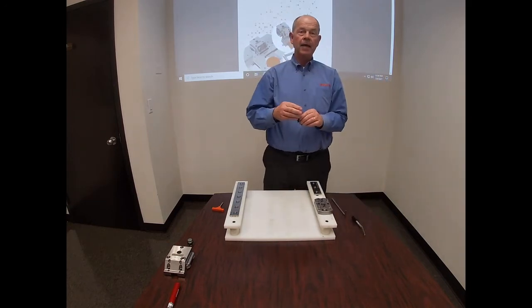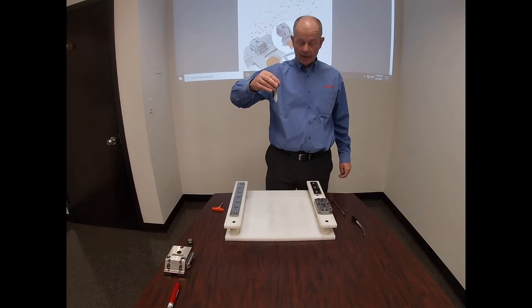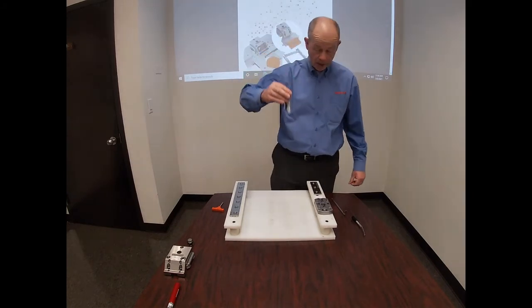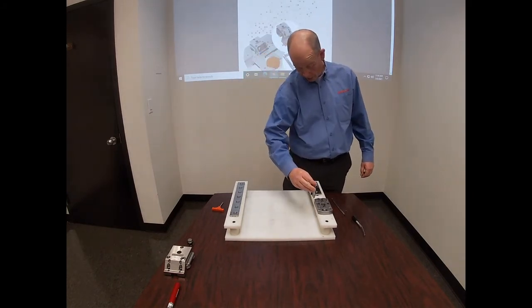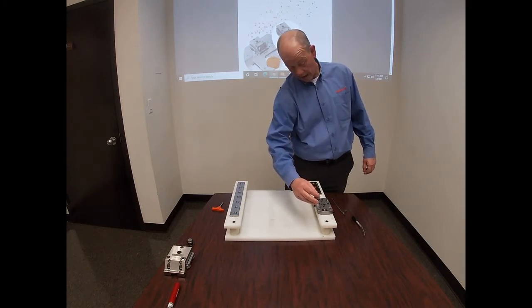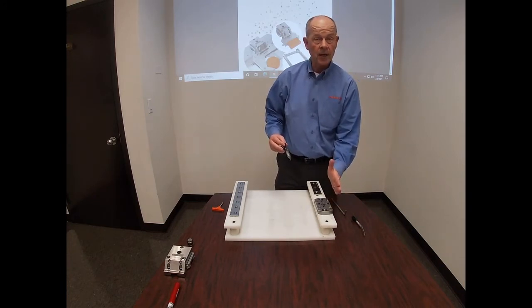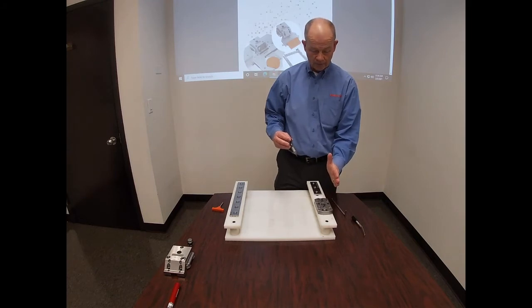Then utilizing a dial indicator that will be mounted to the head of your wire EDM machine, simulated by my arm and hand right now, you're going to indicate across that ground face and adjust accordingly so that the chuck is true to your XY travels.